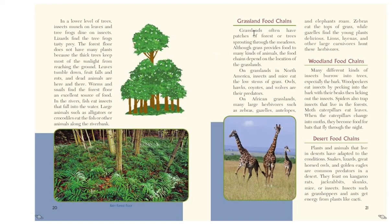Grassland food chains. Grasslands often have patches of forest or trees sprouting through the meadows. Although grass provides food to many kinds of animals, the food chains depend on the location of the grasslands. On grasslands in North America, insects and mice eat the low stems of grass, and owls, hawks, coyotes, and wolves are their predators. On African grasslands, many large herbivores such as zebras, gazelles, antelopes, and elephants roam. Zebras eat the tops of grass while gazelles find the young plants delicious. Lions, hyenas, and other large carnivores hunt these herbivores.